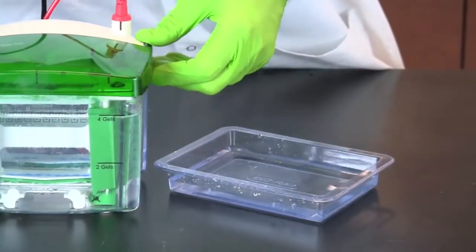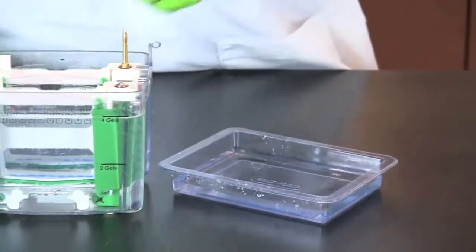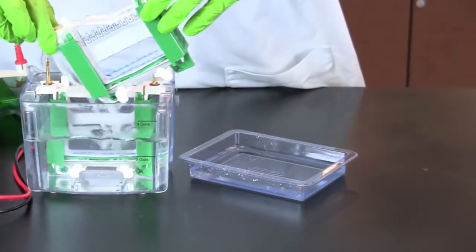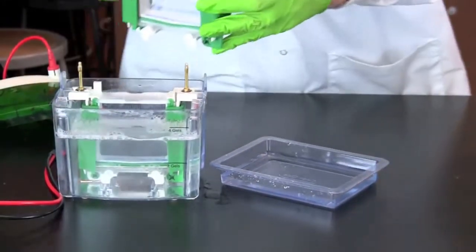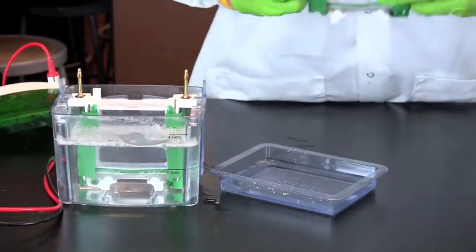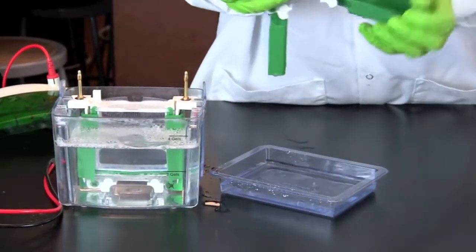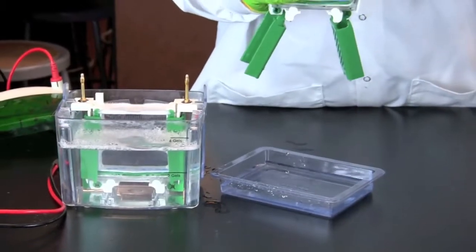When the electrophoresis is complete, turn off the power and remove the lid from the chamber. Remove the electrode assembly and pour the buffer from the inner chamber back into the tank. Release the green clamps and remove the gel cassette from the electrode assembly.